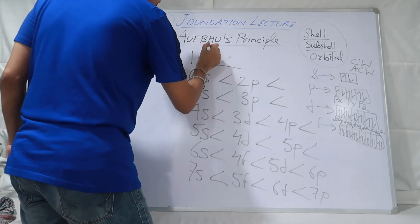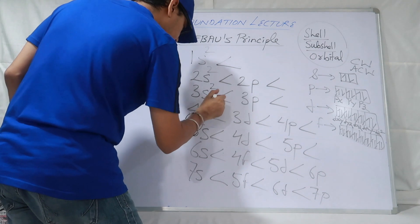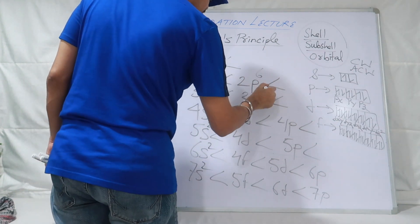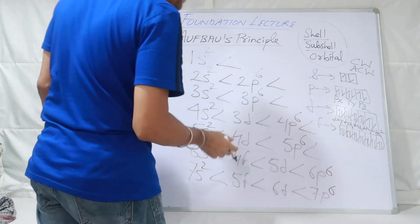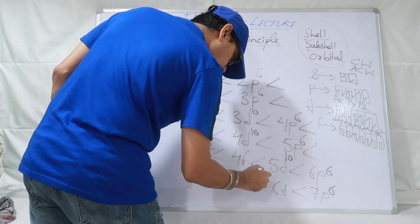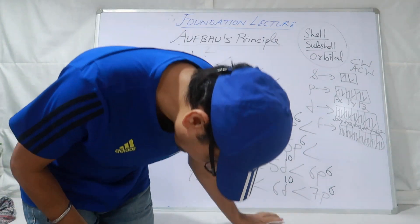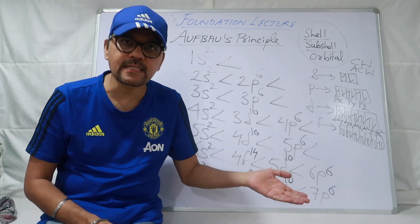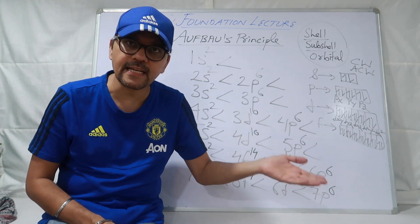S can accommodate maximum 2 electrons. Jahaan pe bhi P likha hai — baad mein 6 kar dete hain. D mein kitne electrons aa sakte hain maximum? 10. F mein 14. Ab aapko yeh poora Aufbau principle isi way se yaad karo: 1S2, 2S2, 2P6, 3S2, 3P6, 4S2, 3D10, 4P6, 5S2, 4D10, 5P6 and so on.